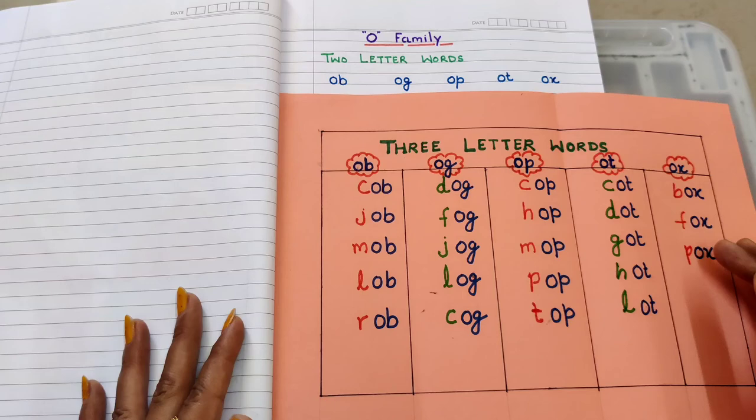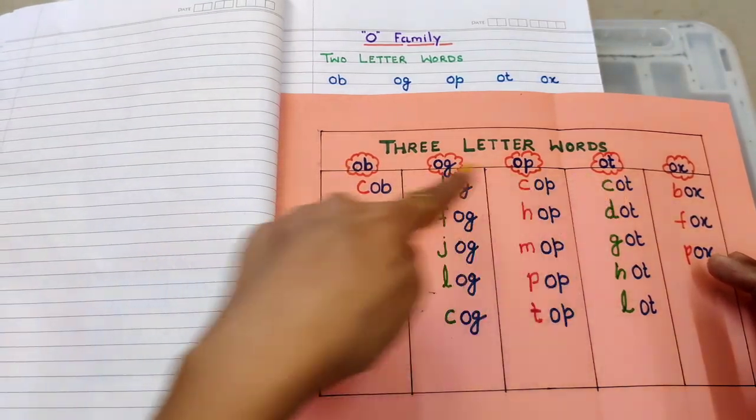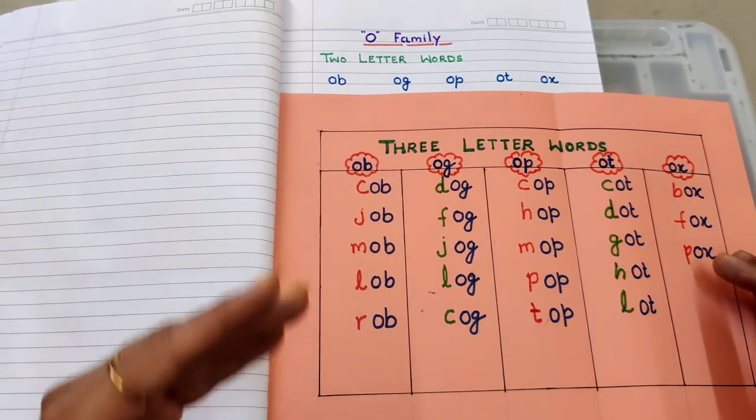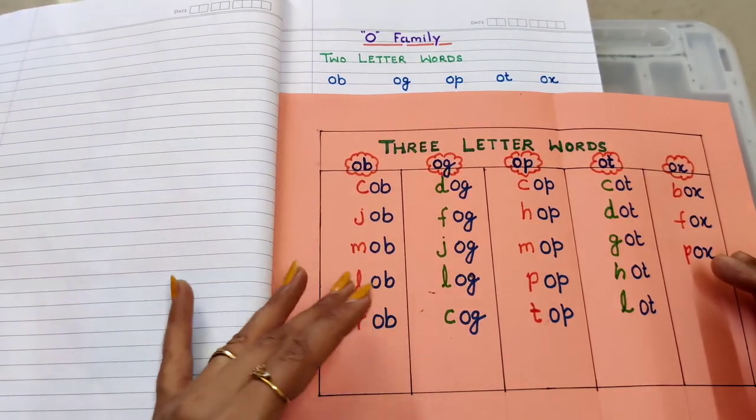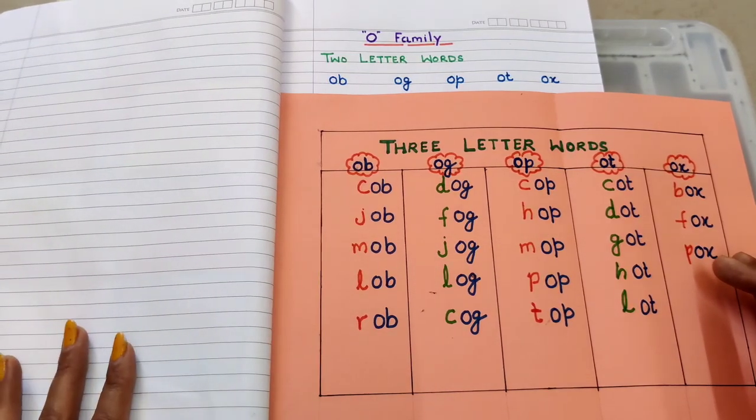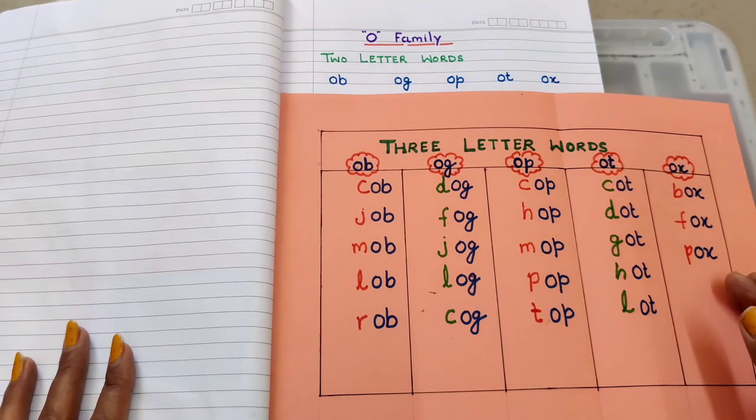So guys, this is the simplest way to teach your kids blending by adding onset to the rhymes. I hope you liked this video. If you liked it, hit the like button and don't forget to subscribe to our channel for kids learning content as well as kids study material reviews. Thank you for watching.